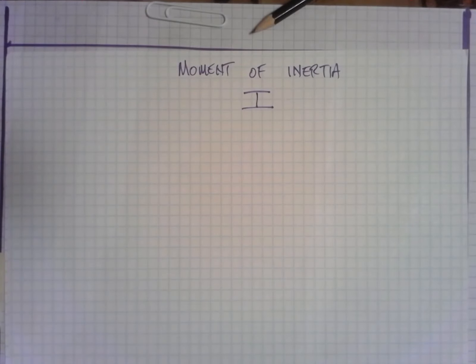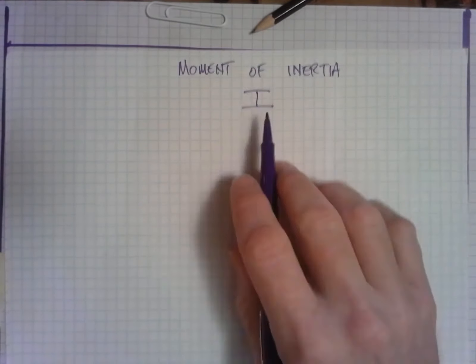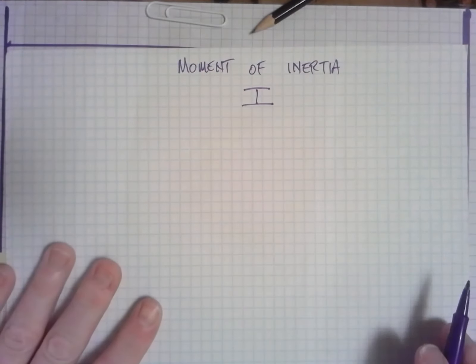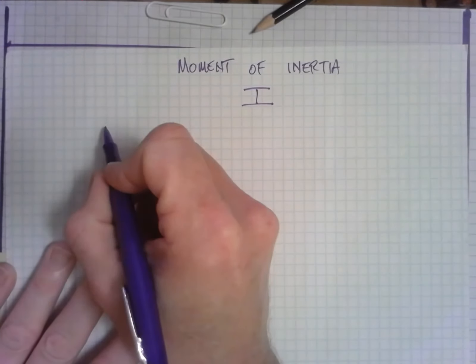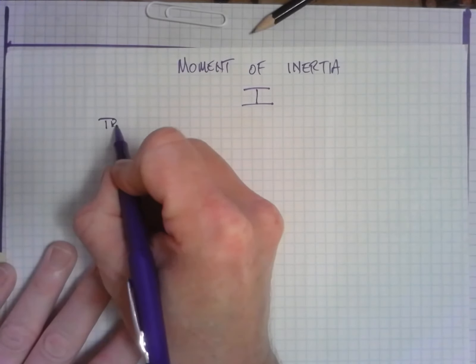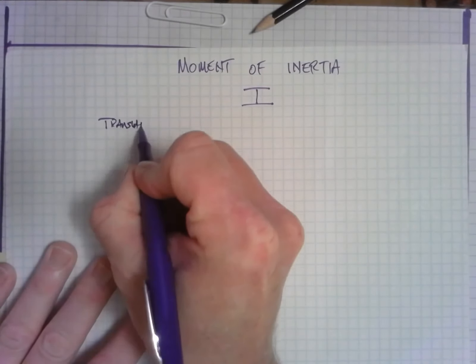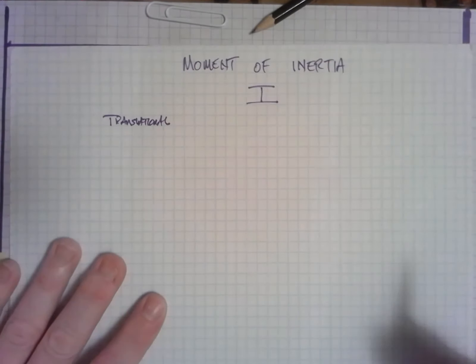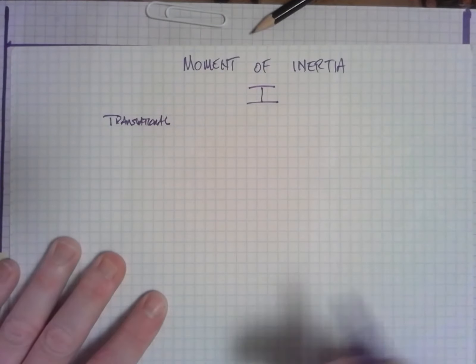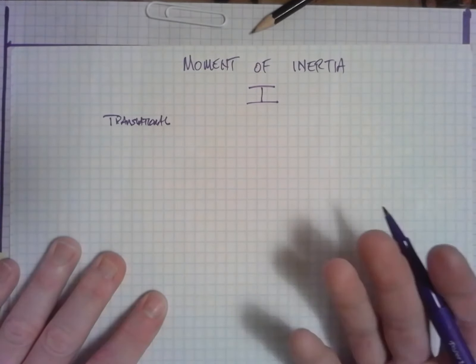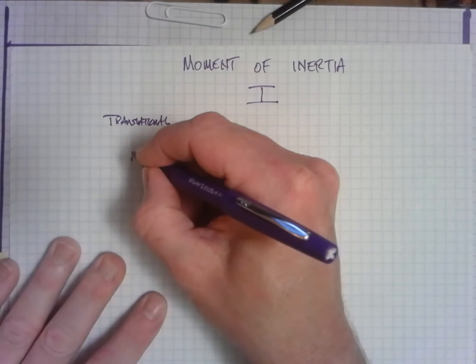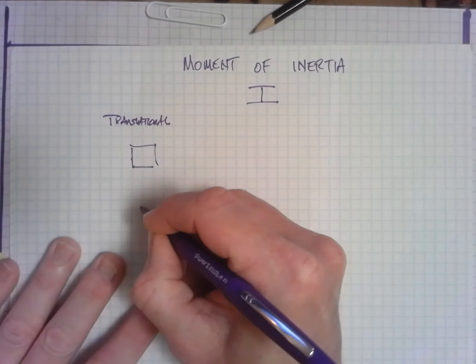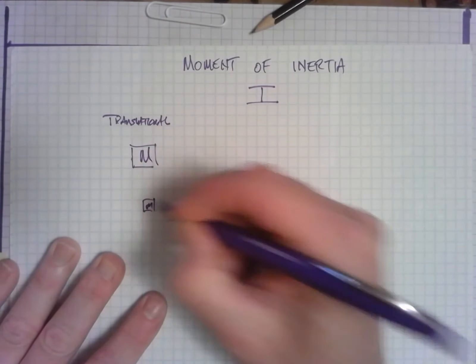Probably one of the trickiest ideas in all of rotation is the moment of inertia. In translational motion, what makes an object hard to move or resist changes in its motion is a concept called inertia, and it's mass, period, end of story. A large object is going to be harder to accelerate than one with less mass.